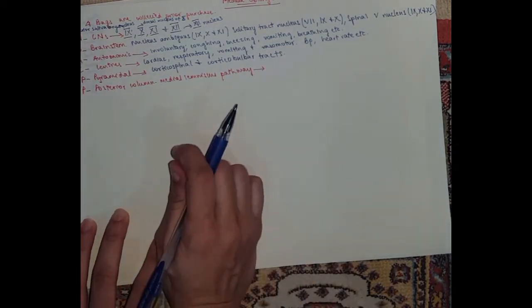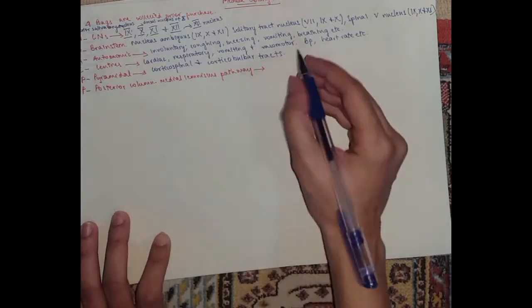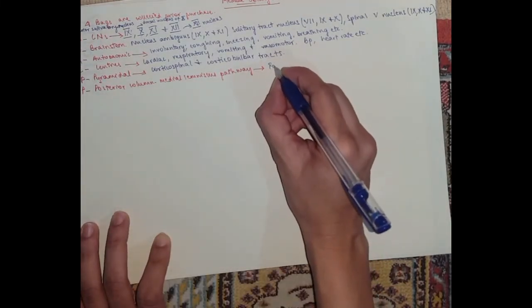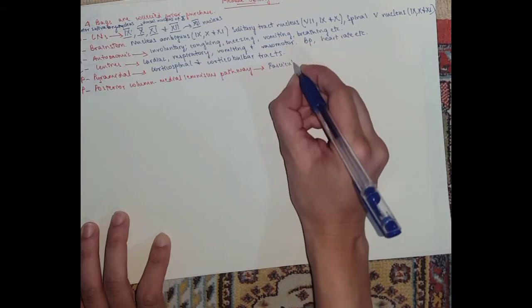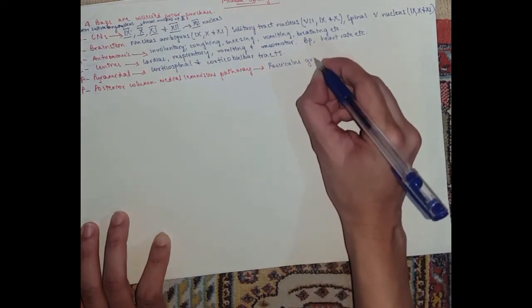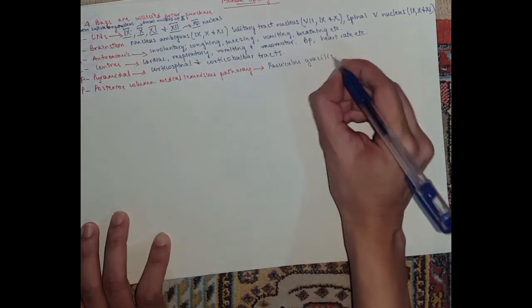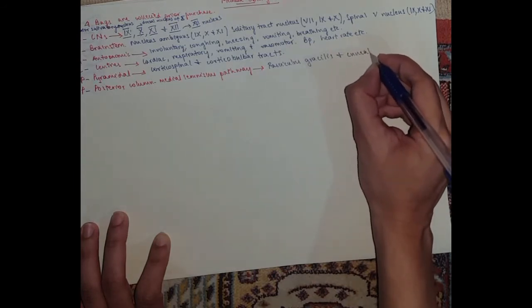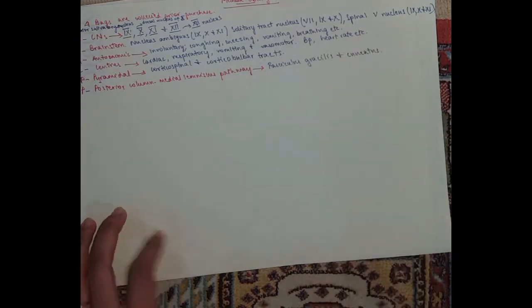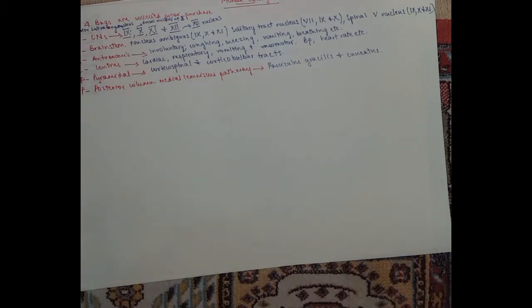The posterior column medial lemniscus pathway has two tracts as well. It's got the fasciculus gracilis and cuneatus. Alright, so that was the general view.